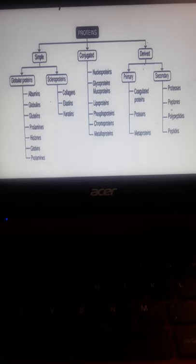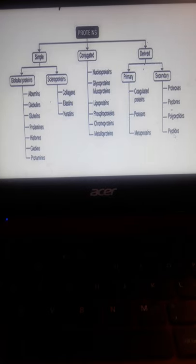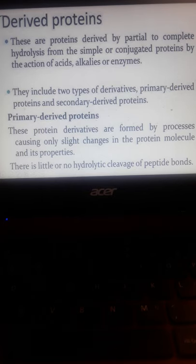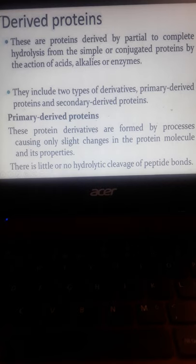We have nucleoproteins, glycoproteins, mucoproteins, lipoproteins, phosphoproteins, chromoproteins, and metalloproteins. We have derived proteins with primary and secondary. Derived proteins are coagulated proteins. This is what we will discuss, primary proteoses and secondary proteases. This is the enzyme involved in the hydrolysis of peptides, peptones, polypeptides, and peptides. Derived proteins are proteins derived from partial to complete hydrolysis from simple or conjugated proteins by the actions of acids, alkalis, or enzymes.